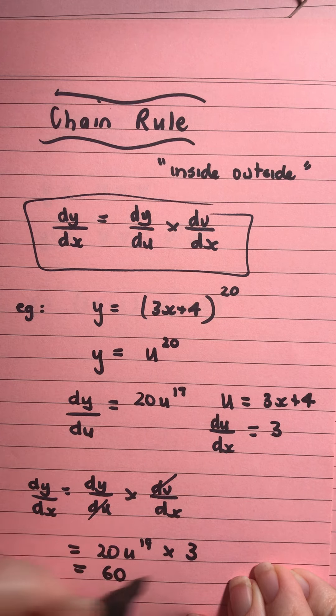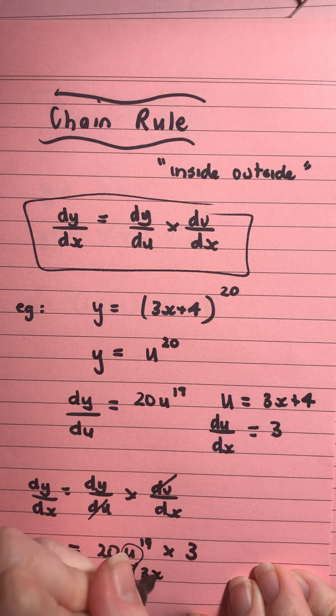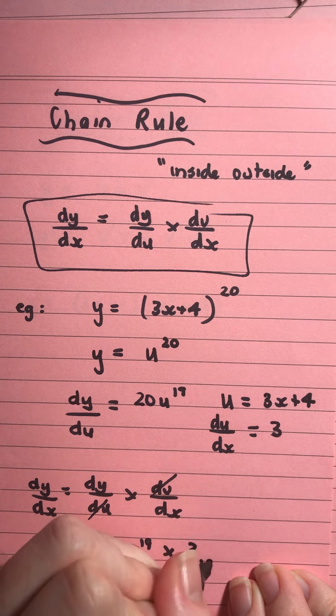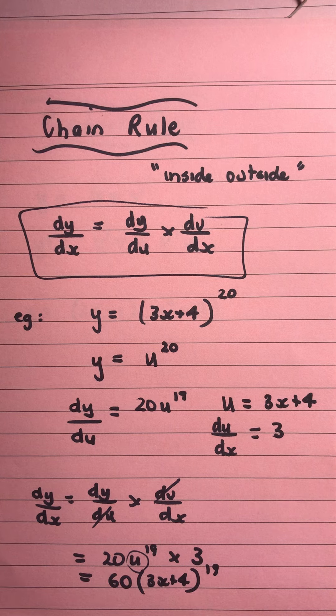My dy on du is 20u to the 19 and I'm multiplying that by 3. So, I'll write that as 60, 20 times 3. Then I'm going to put my u back in. So, I wrote my u over here. It was 3x plus 4 and I'll raise that to the power of 19. Hopefully, that helps you with your chain rule questions.